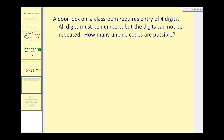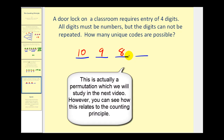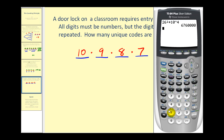A door lock on a classroom requires entry of four digits. All digits must be numbers but the digits cannot be repeated. How many unique codes are possible? This is a slight variation since the digits are not independent — they cannot repeat. For the first digit there are no restrictions, so there are ten possibilities, zero through nine. For the second digit we can't repeat the first, leaving nine possibilities. For the third we can't repeat either of the first two, leaving eight. For the fourth we can't repeat any of the first three, leaving seven. So ten times nine times eight times seven gives us five thousand forty unique codes.